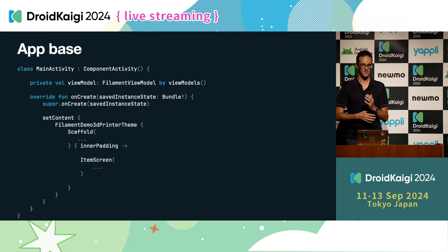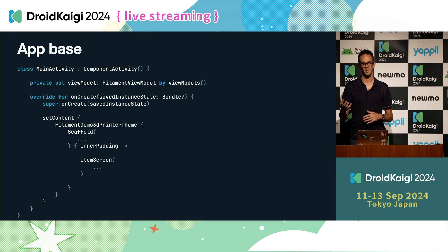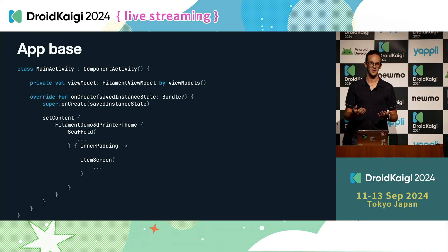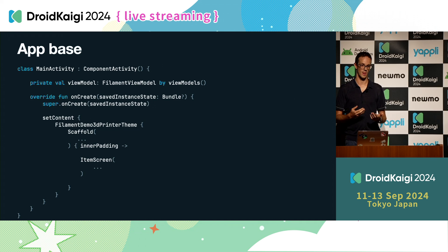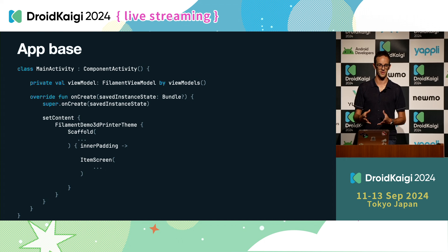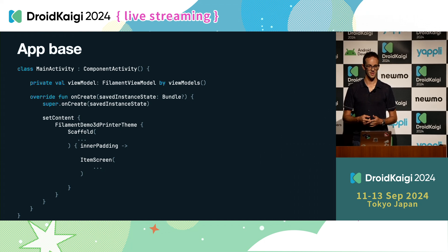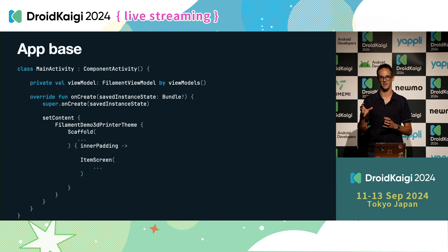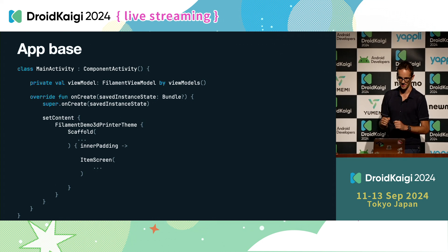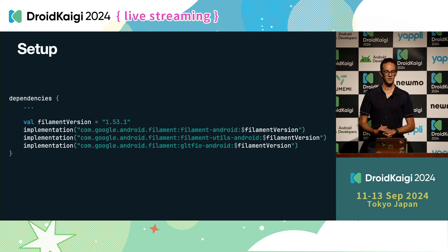The app is made in Compose because I wanted to experiment with how to make Filament work integrated in Compose. The base is a classic architecture components setup — just one activity with Compose, a ViewModel for better encapsulation of the logic, and I'm basically using Scaffold with two main views: one for the list and one for the detail of a single element.